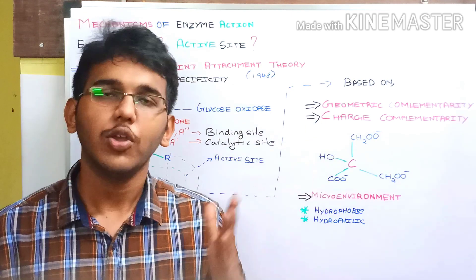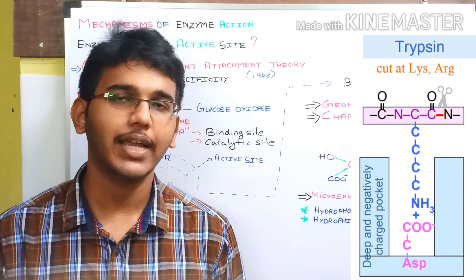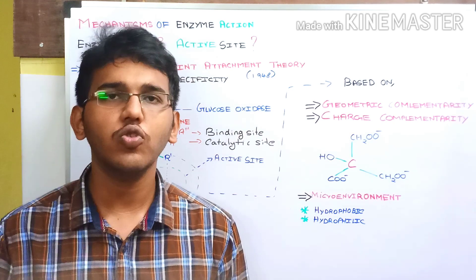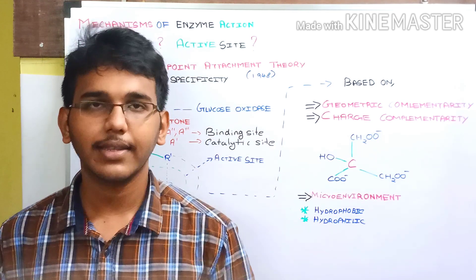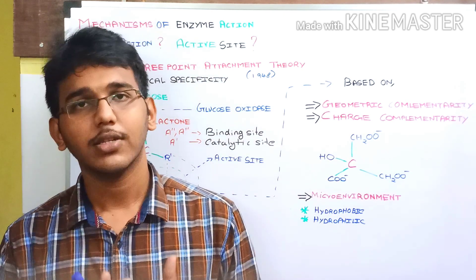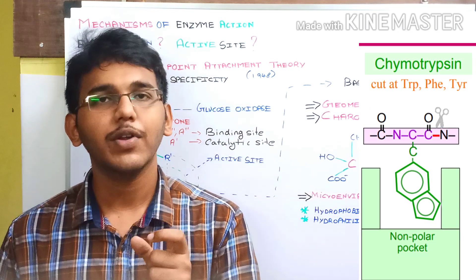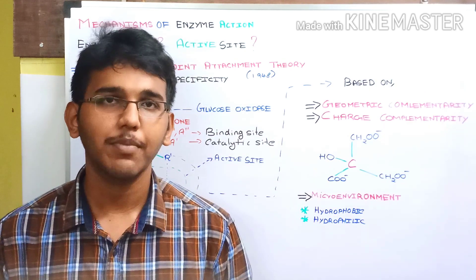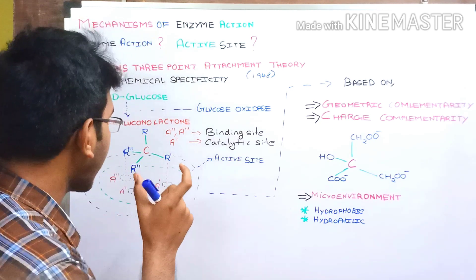Next, we have charge complementarity. In the active site pocket, an amino group (a positive group) interacts with a COO-minus group (a negative group) of the substrate due to their opposite charges — this is electronic complementarity. Finally, microenvironment: active sites sometimes have a hydrophobic or hydrophilic (non-polar or polar) microenvironment. For example, a non-polar group can only interact with a non-polar microenvironment in the active site, and a polar group cannot. This also leads to the specificity of the enzyme, allowing it to recognize whether the substrate is specific to it.